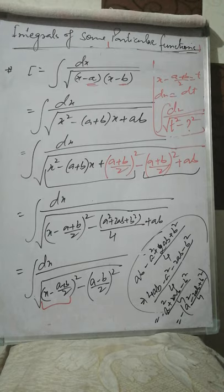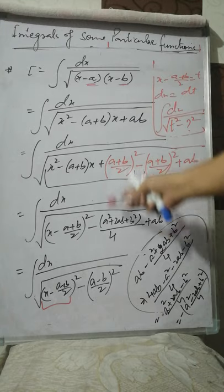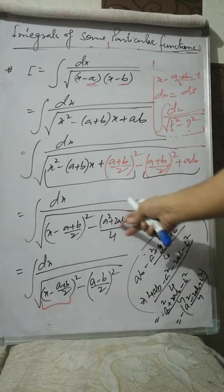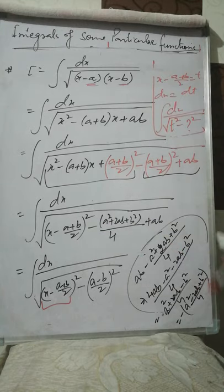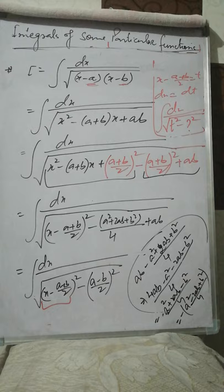So that's all from this topic. The key technique to understand is completion of square. Exercise 7.4 is based on this — the first half on particular functions formulas and the second half on linear over quadratic. Good luck with your practice. If there is any doubt, please feel free to ask. Thank you so much.